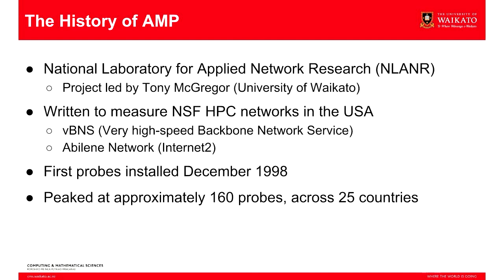A couple of networks sprang up: the Very High Speed Backbone Network Service (VBNS) and the Abilene Network by Internet2. In the beginning these networks had a really open measurement stance — AMP monitors, PlanetLab machines, syslogs, routing data, SNMP measurements, all publicly available because it was public money. In 1998, the first probes were installed on the VBNS on 45 to 622 megabit links across the States.